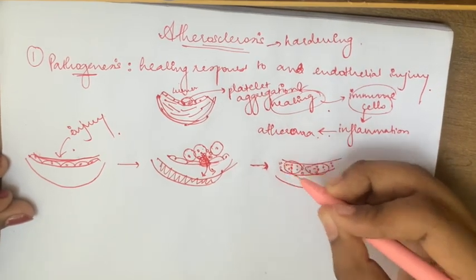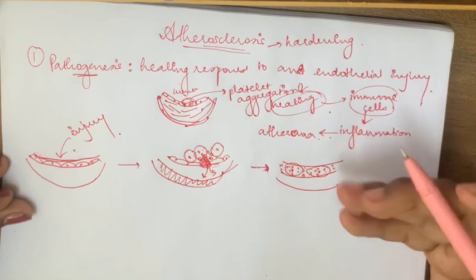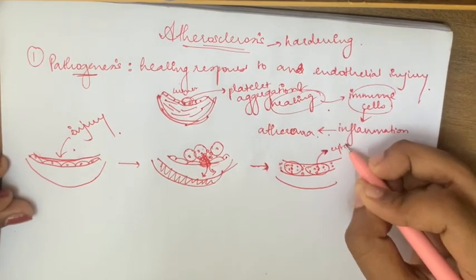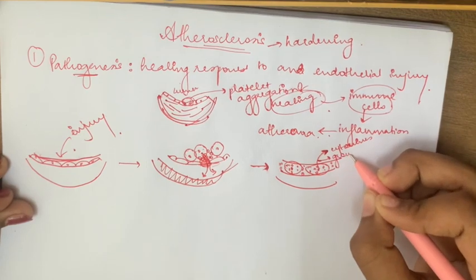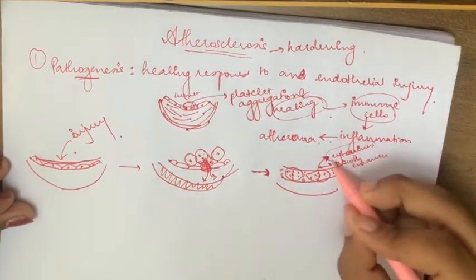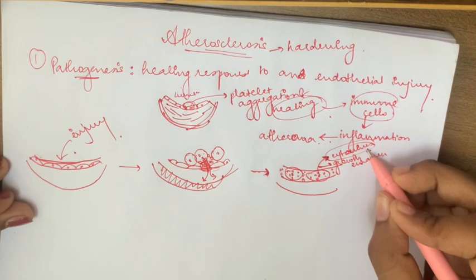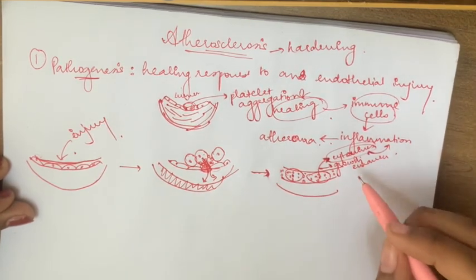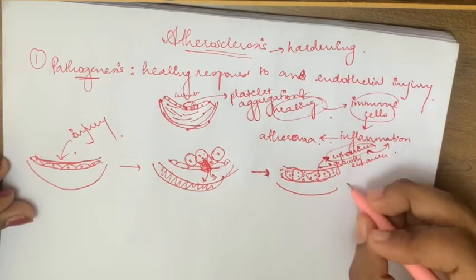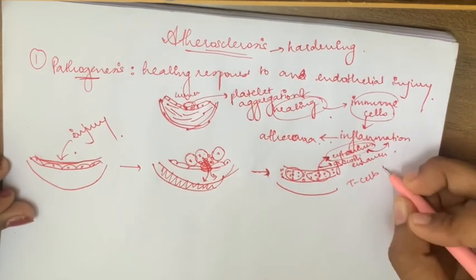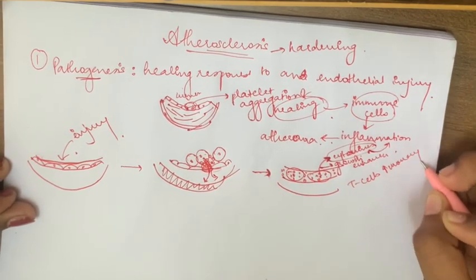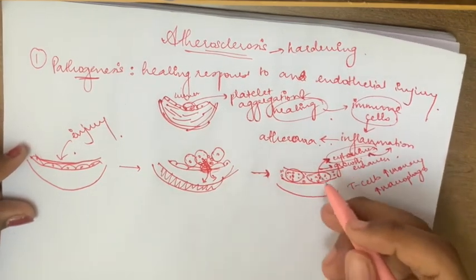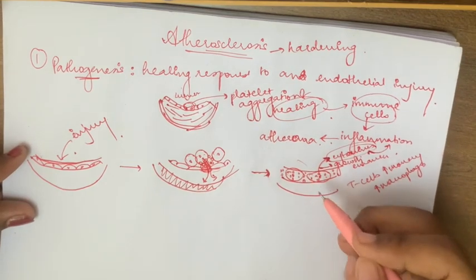They become activated. So these macrophages are activated and they release several factors known as cytokines, growth enhancers, etc. Now cytokines are one of the most important mediators of inflammation. When cytokines are released, this causes more cells like T cells, excessive monocytes and other macrophages to also accumulate near this artery and enter via the endothelium.